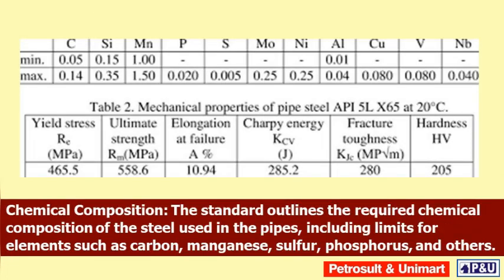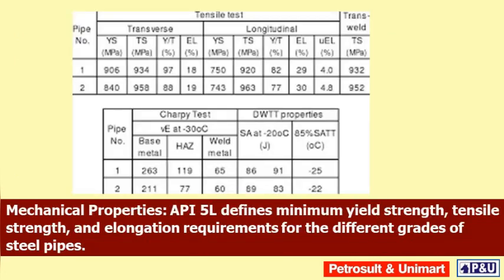Chemical composition: The standard outlines the required chemical composition of the steel used in the pipes, including limits for elements such as carbon, manganese, sulfur, phosphorus, and others.